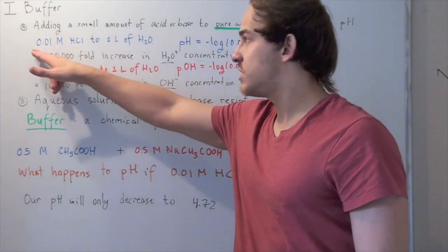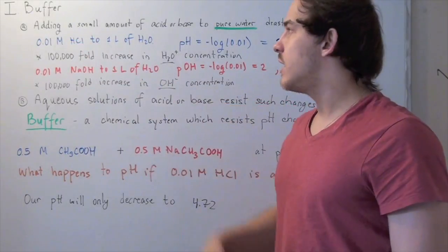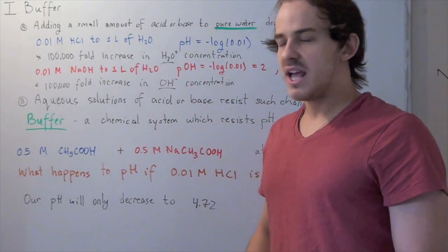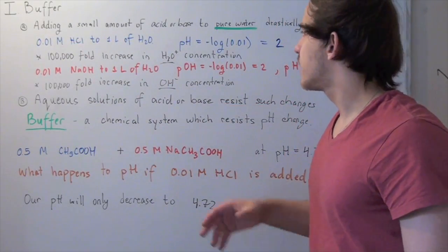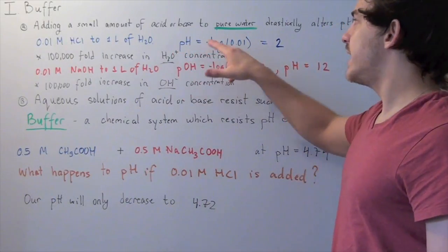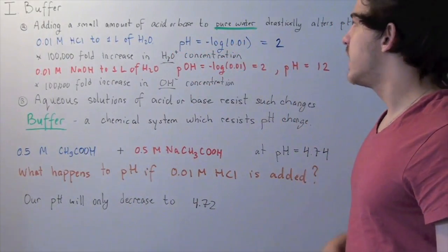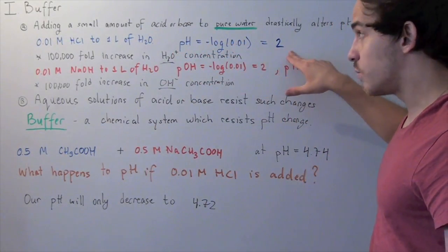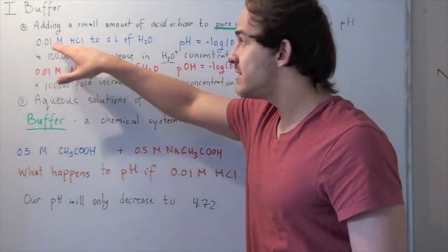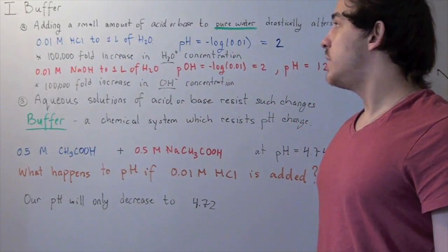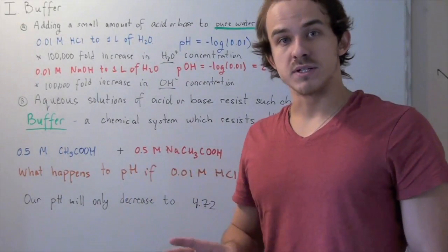Suppose we add 0.01 molar of HCl to our 1 liter system. The pH is equal to negative log 0.01, which gives us a pH of 2. That means if we add this hydrochloric acid, our pH drops by 5 increments.